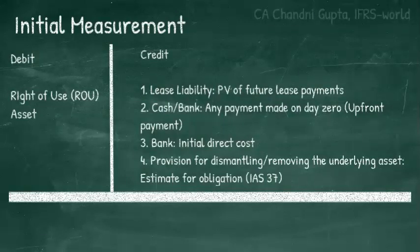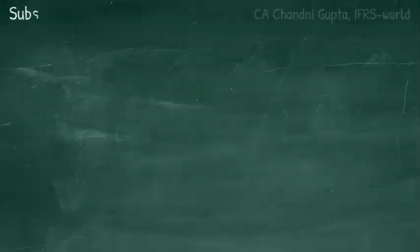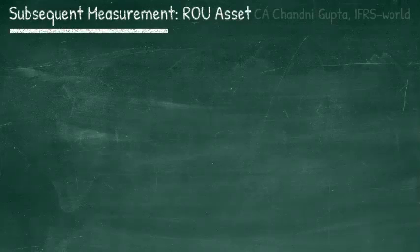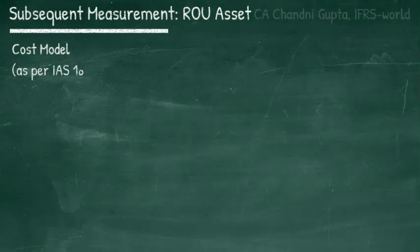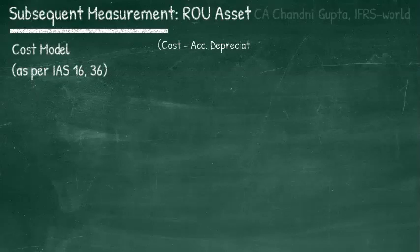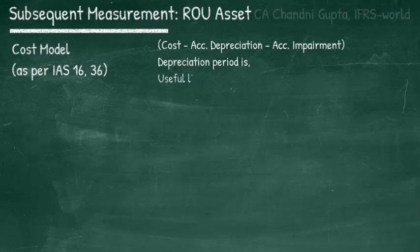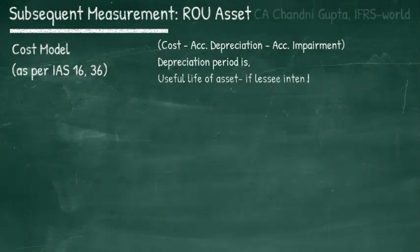On commencement date, we have recognized: the ROU asset at its cost; a lease liability; and a provision, if any, for dismantling or removing the underlying asset. After commencement date — the subsequent measurement — the lessee measures the ROU asset as per IAS 16 Property, Plant and Equipment, IAS 36 Intangible Assets, or IAS 40 Investment Property, depending on classification. In general, the ROU asset is measured at the cost model as per IAS 16, meaning at every balance sheet date it is measured at cost minus accumulated depreciation minus accumulated impairment. Under IFRS 16, lessees get depreciation for all leases — which was not the case under IAS 17.